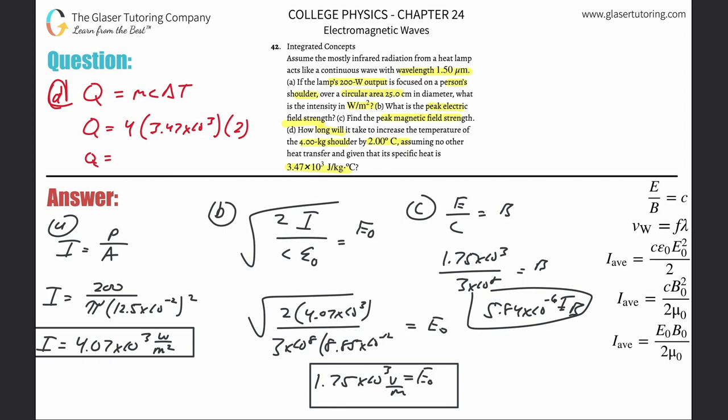4 times 3.47 times 10 to the third, multiplied by 2, gives us 27,760 joules of energy needed to raise the temperature of that shoulder.